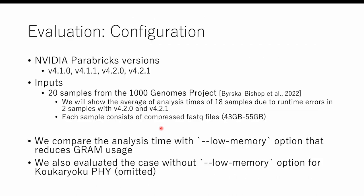We varied Parabricks across four versions and used 20 samples from the 1000 Genomes Project as input. We will show the average analysis time of 18 samples due to runtime errors in two samples with several Parabricks versions. We compared analysis time with the low-memory option, which reduces GPU RAM usage, and also evaluated the case without the low-memory option for KOKAYUKFI, though that result is skipped due to time limitations.